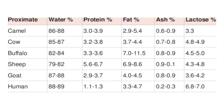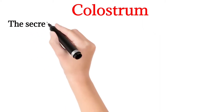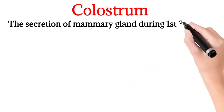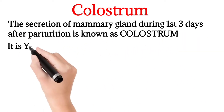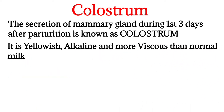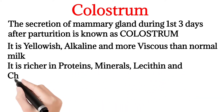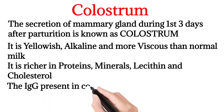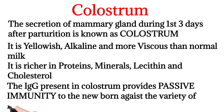Different species have different compositions of milk, and here is the comparison. The secretion of mammary glands during the first three days after parturition is known as colostrum. It is yellowish, alkaline, and more viscous than normal milk. It is richer in proteins, minerals, lecithin, and cholesterol. The IgG present in colostrum provides passive immunity to the newborn against a variety of infections.